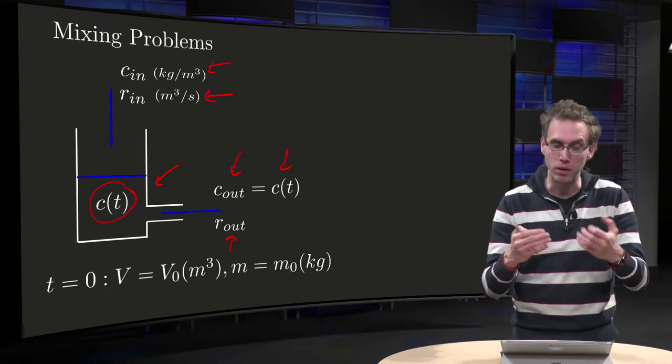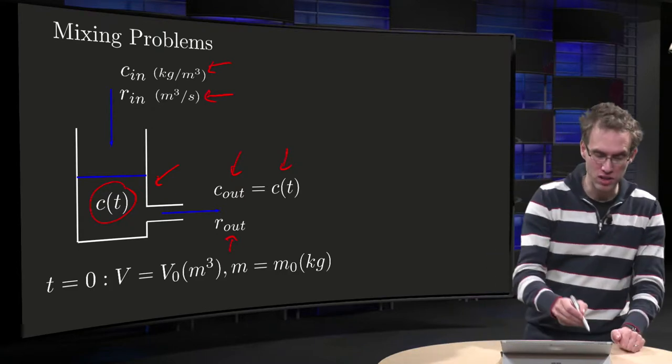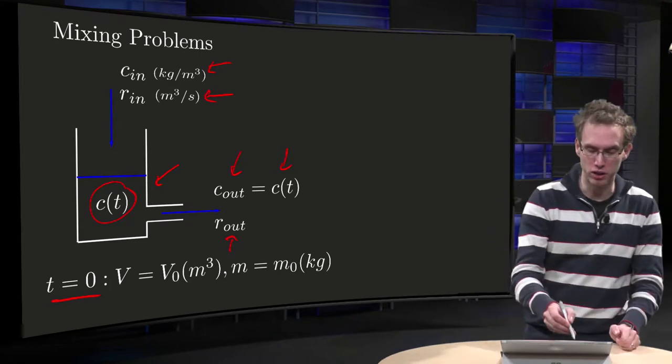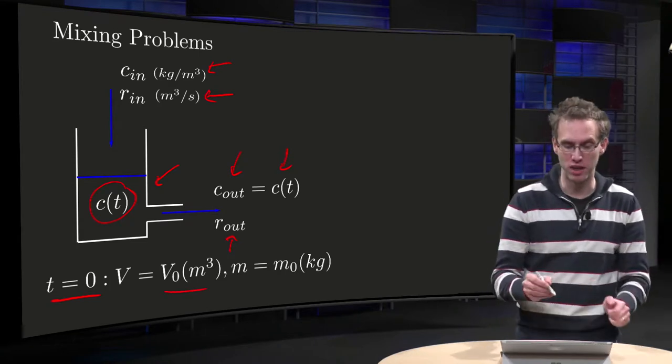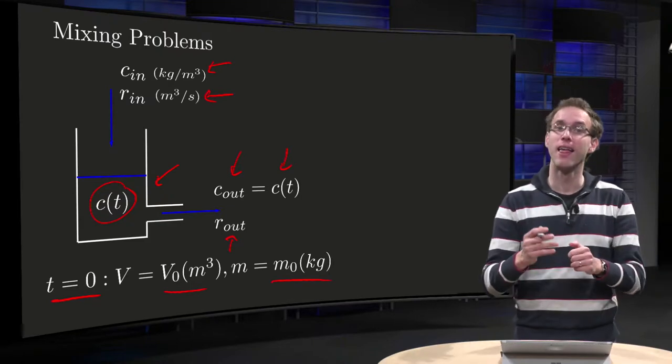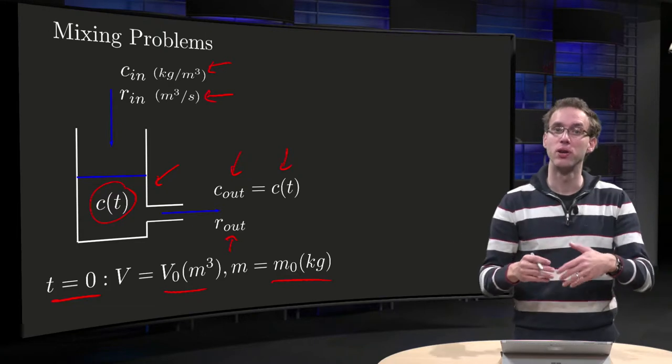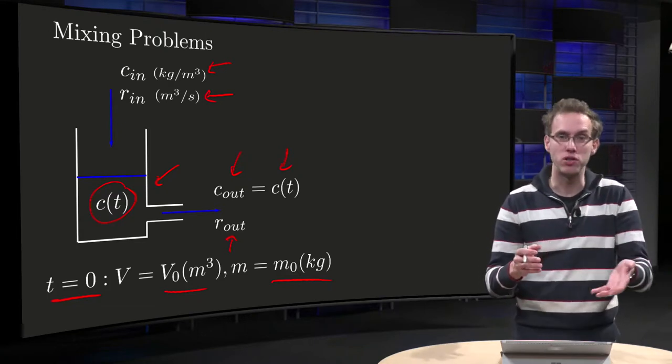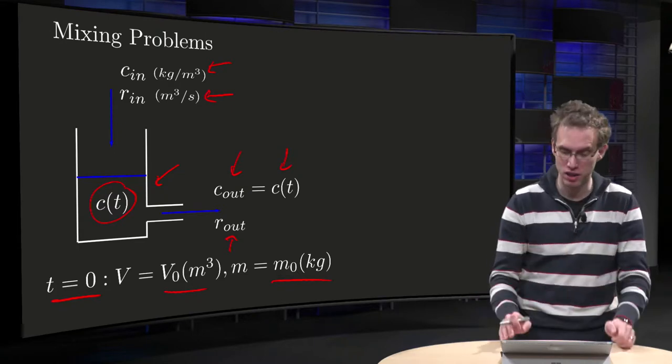So how can we try to solve that problem? Well, at t equals zero, when we start, we have some initial volume in cubic meters given, and some initial mass in kilograms given. And the question is, what happens if time goes on? Does all salt disappear through the outlet, or does the amount of salt increase? Well, let's start to model this.